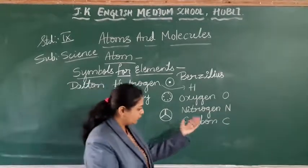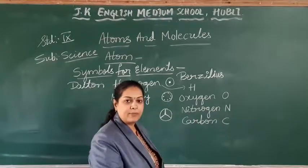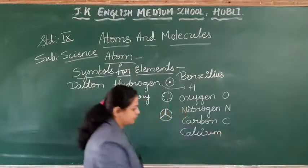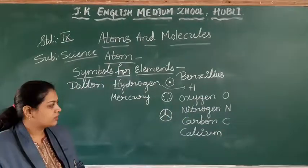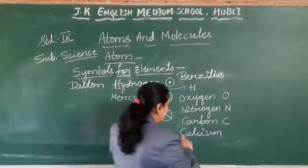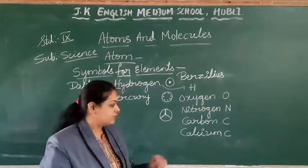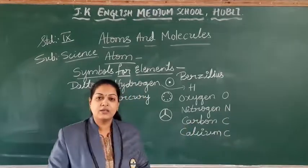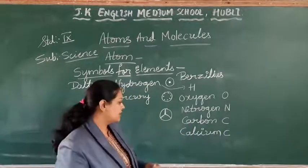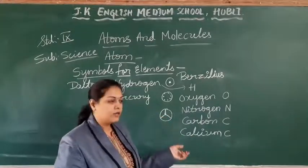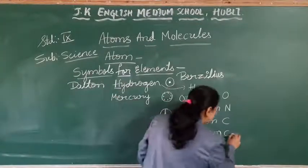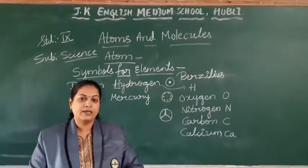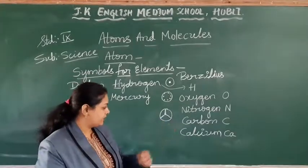For carbon, we say capital C. But let me take another example — calcium. According to Berzelius, I have to write capital C for calcium too. Is it not confusing? If I write C for both carbon and calcium, we will get confused. So what he said: for such elements, we will take even the second letter — C, A. First letter capital, second letter small.